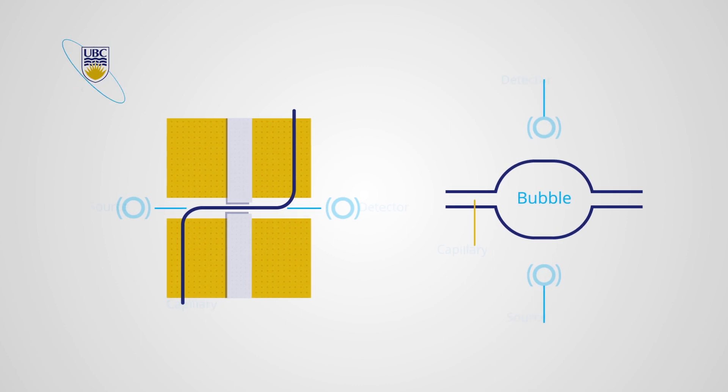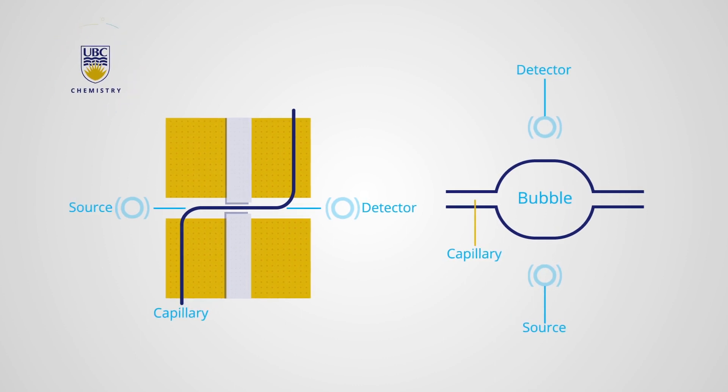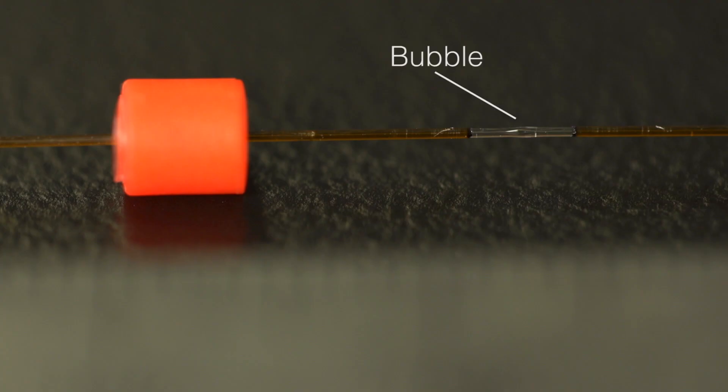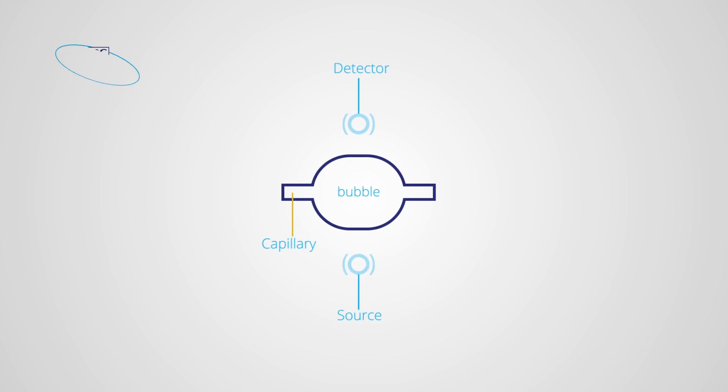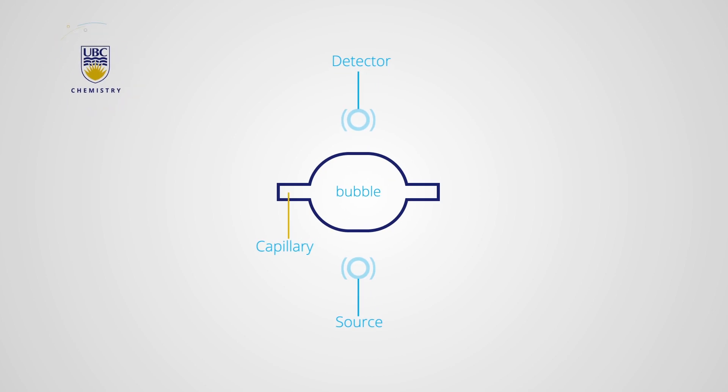Detection of the components occurs on the capillary. This method of detection is used to avoid extra column band broadening. As seen here, a portion of the capillary is isolated and widened slightly to allow light from the light source to pass through it and reach the detector. This widening improves the detection sensitivity since the path length of the capillary is increased.